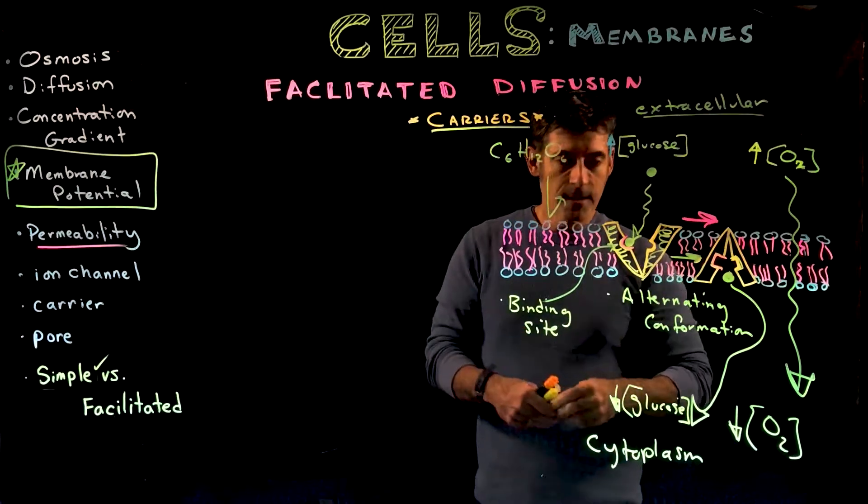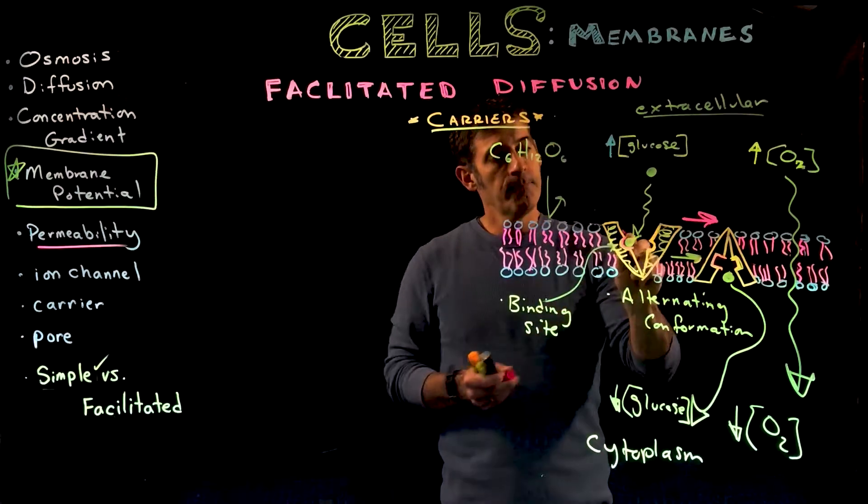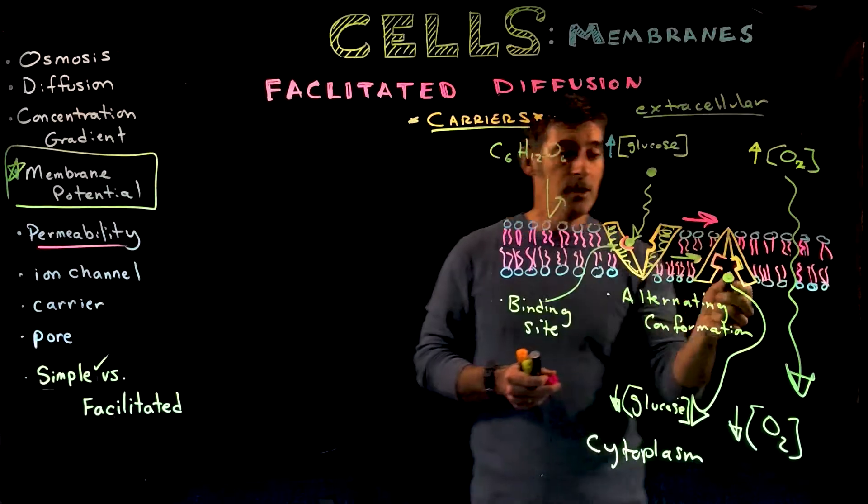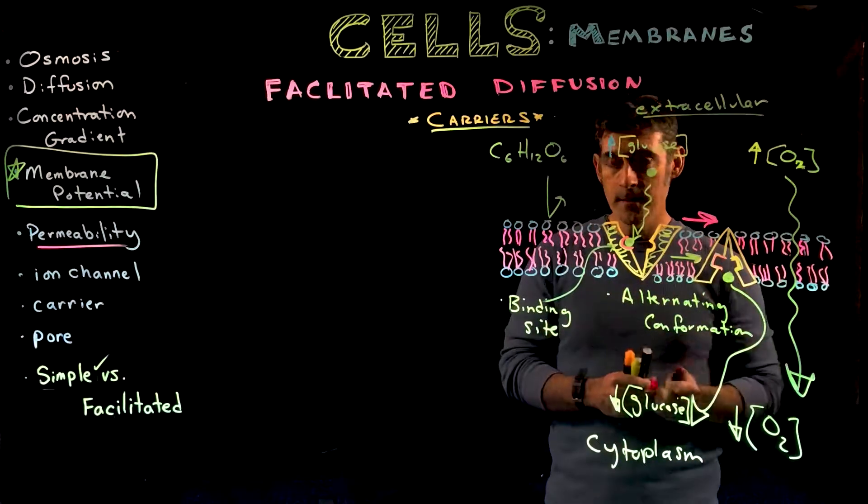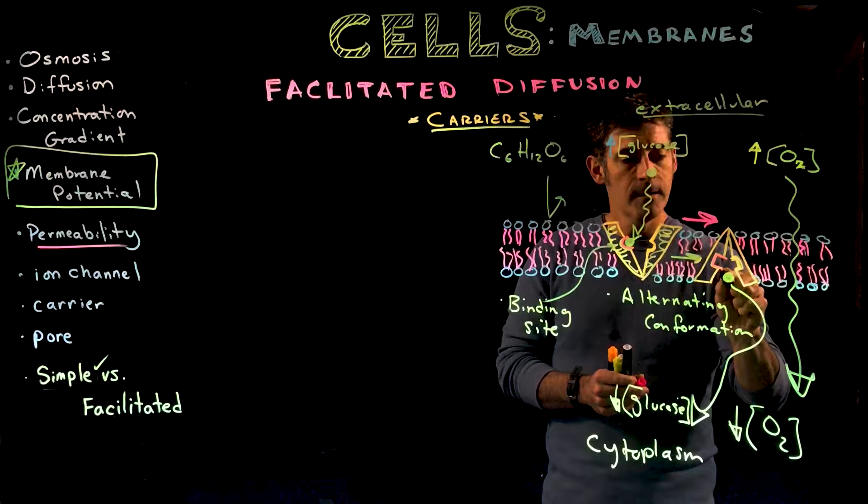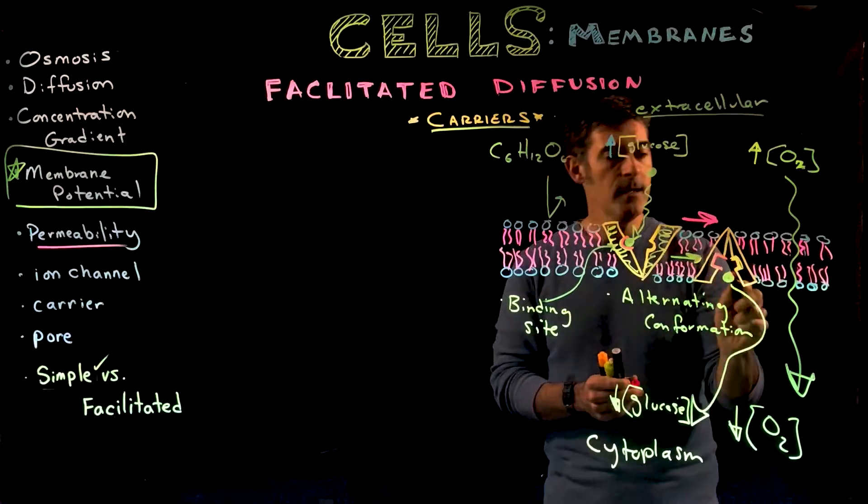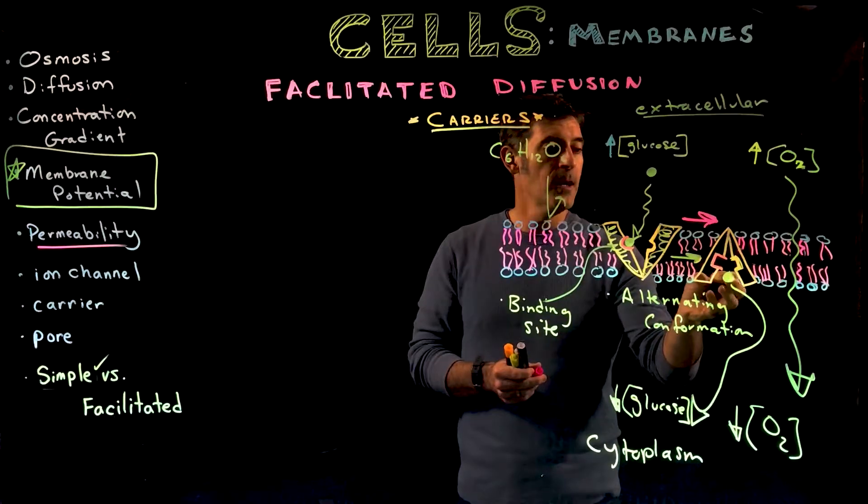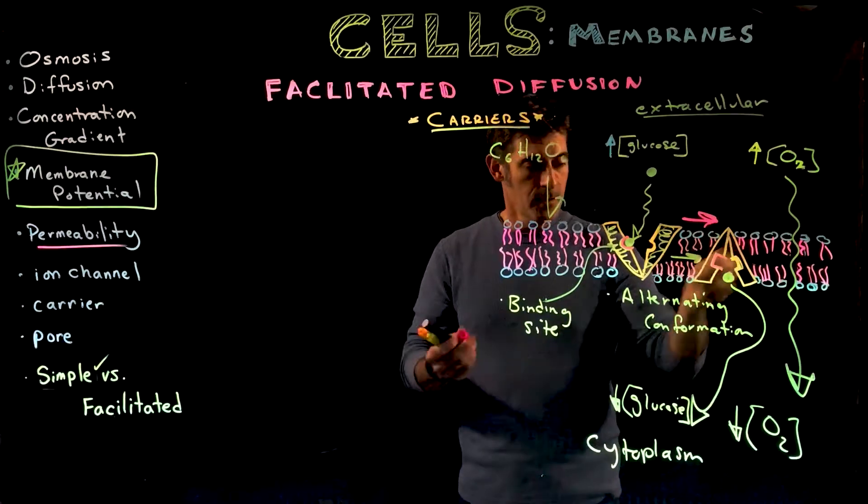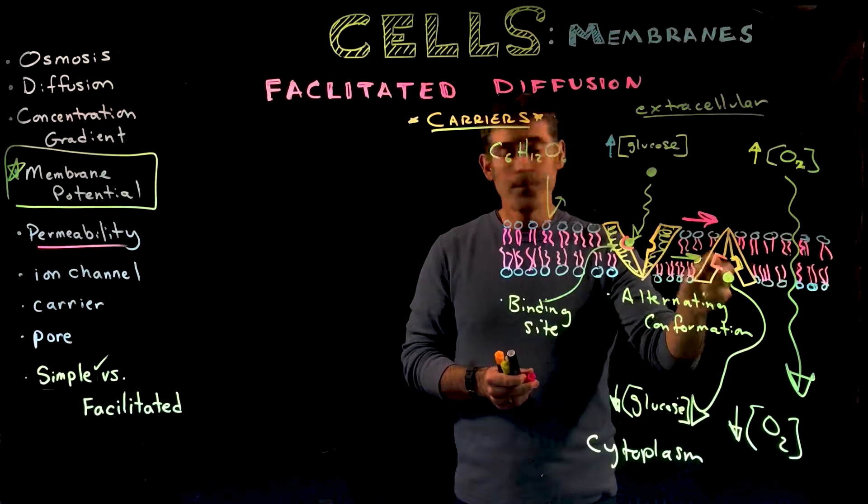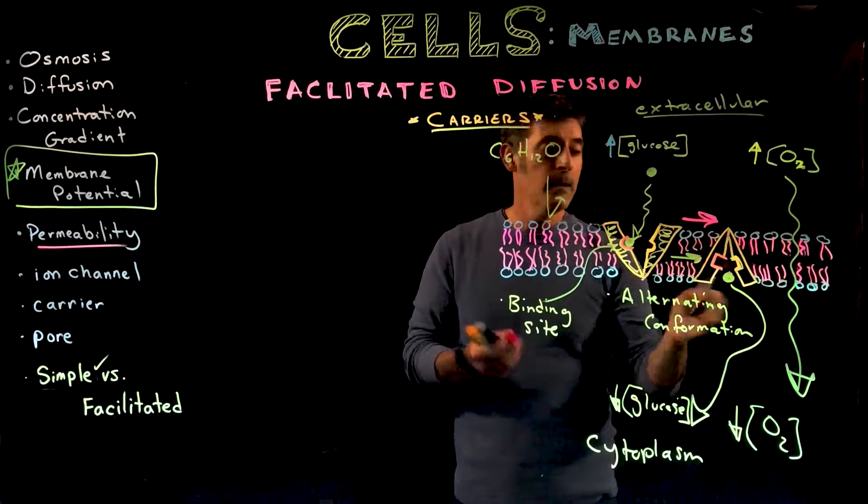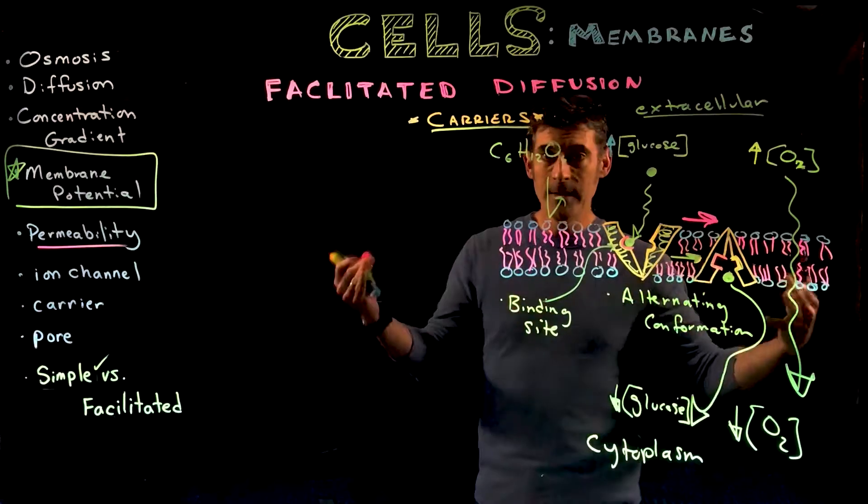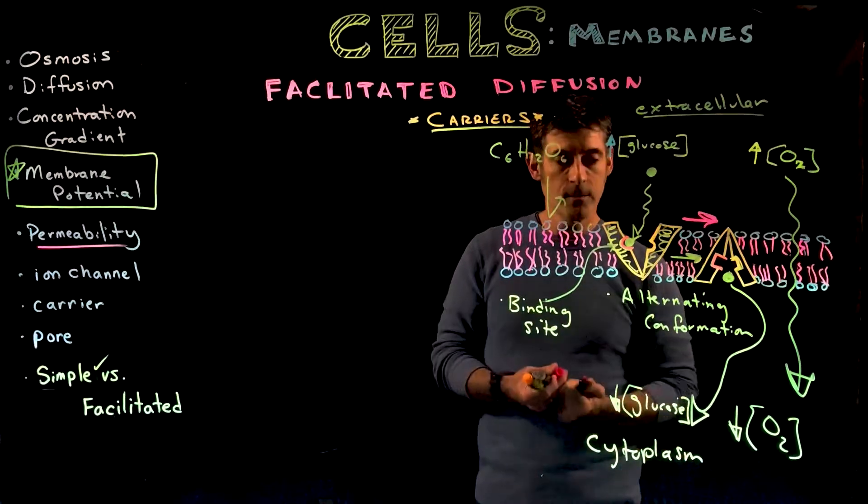When the binding site changes shape, not only does it open to the other side of the membrane, but the binding site itself changes. I drew this square-ish versus the round-ish depiction for glucose—not really accurate, but it gives you an idea. They don't match up. Circle and square—it's not attracted to bind anymore, so it releases the glucose into the cytoplasm.